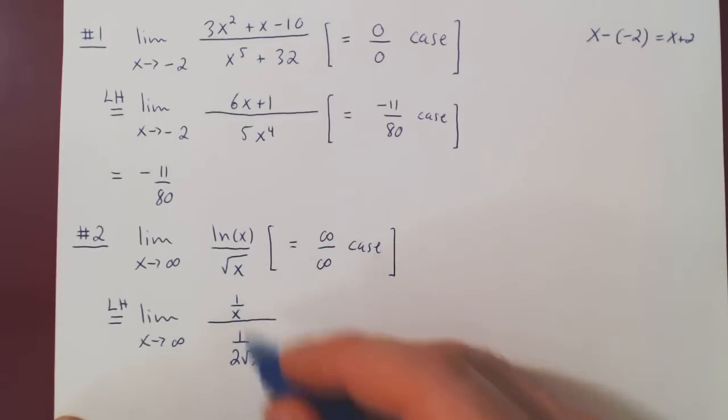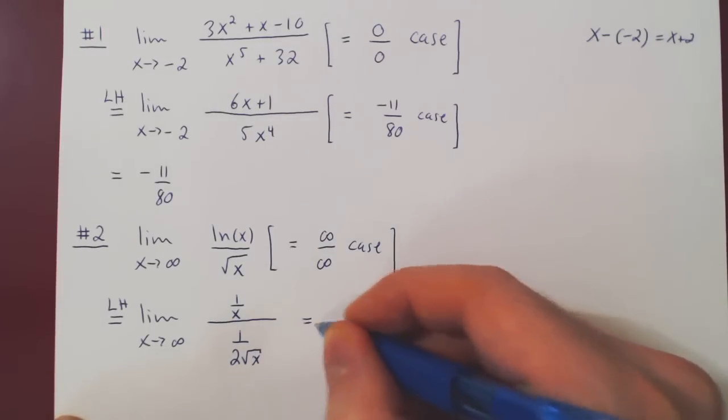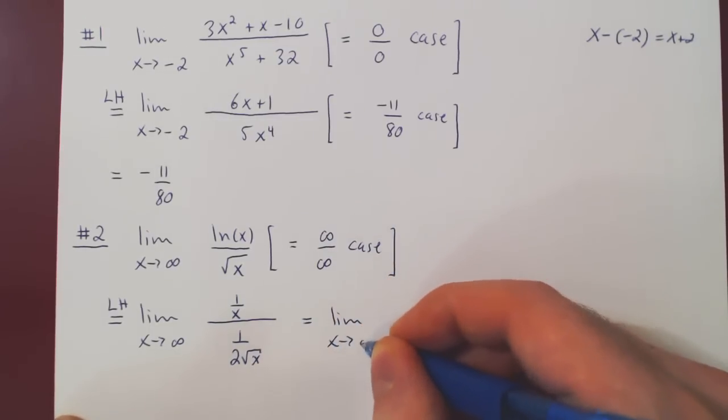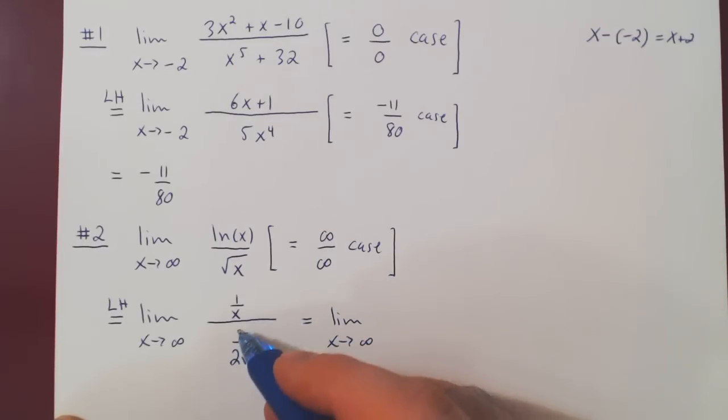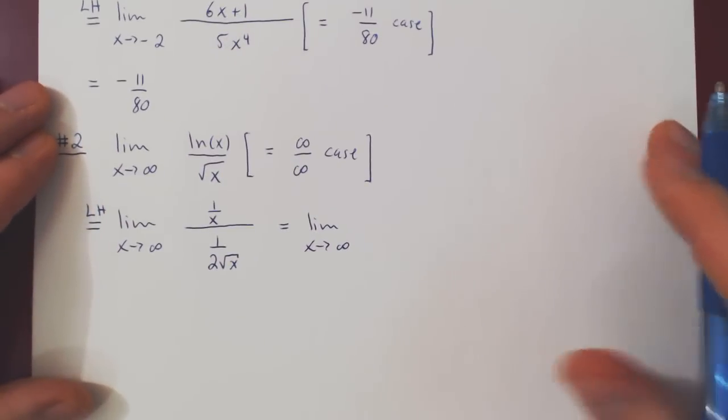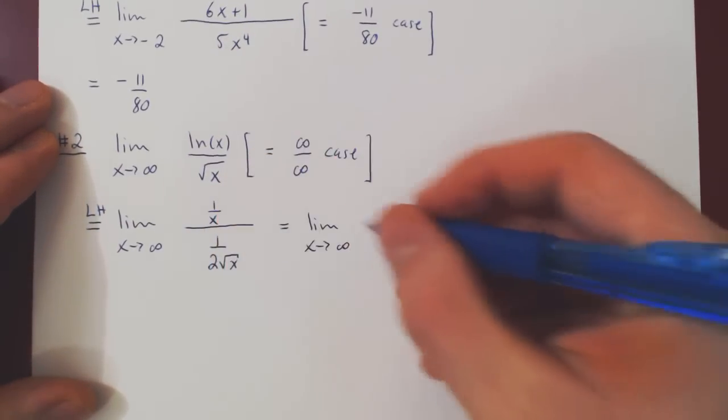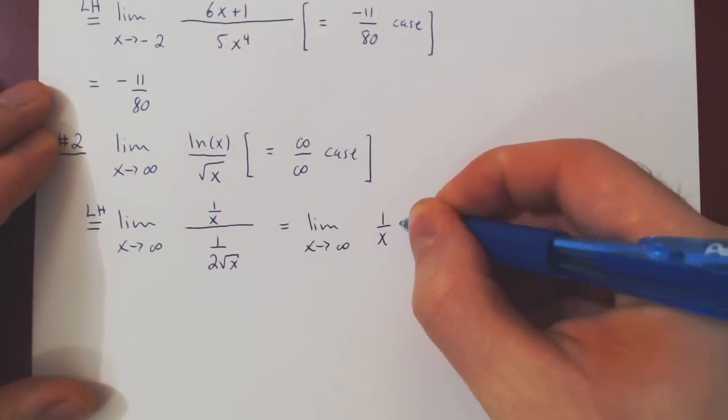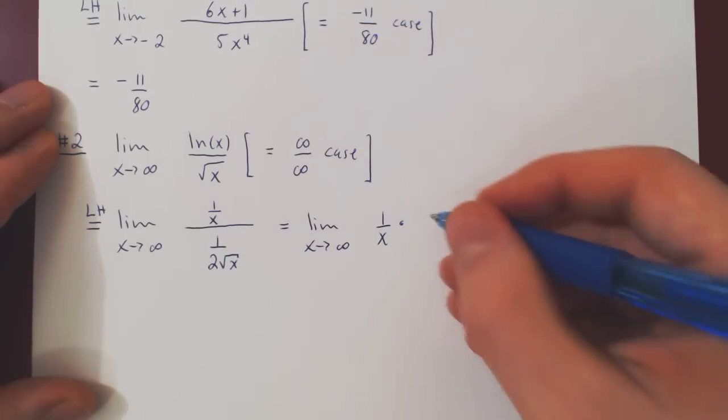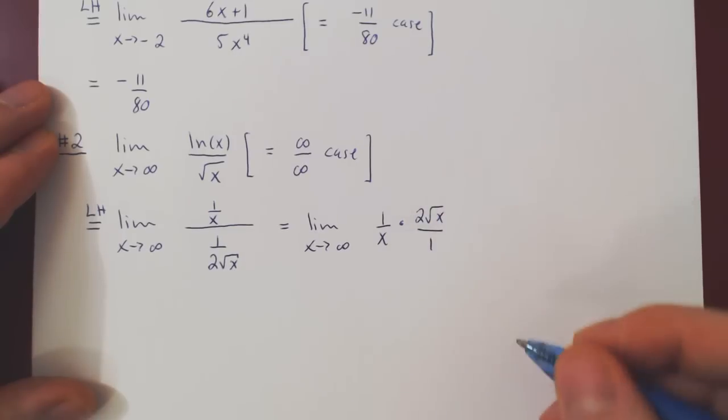Before we consider our case here, let us simplify. If you divide by 1 over 2 root of x, you multiply by the reciprocal, so you have 1 over x on the numerator times the reciprocal of 1 over 2 root of x, which is of course 2 root of x over 1.